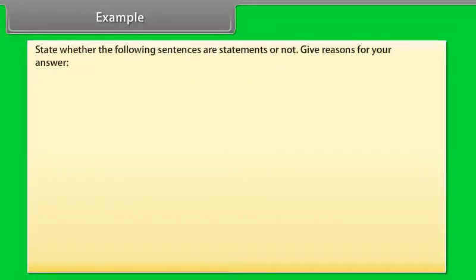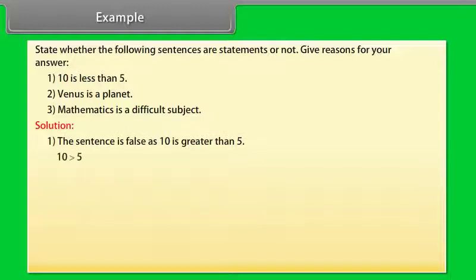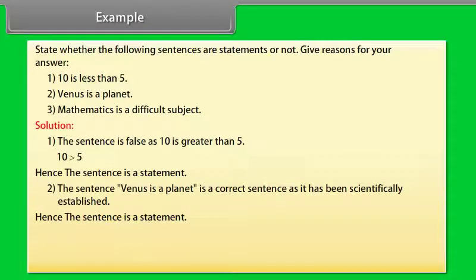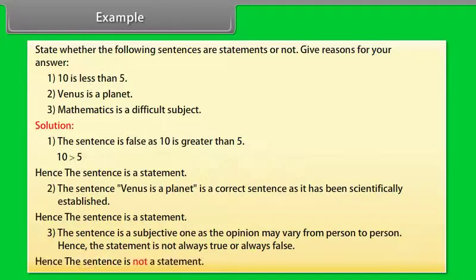Example: State whether the following sentences are statements or not. Give reasons for your answer. (1) 10 is less than 5. (2) Venus is a planet. (3) Mathematics is a difficult subject. Solution: The sentence '10 is less than 5' is false, as 10 is greater than 5. Hence, it is a statement. 'Venus is a planet' is correct, as it has been scientifically established. Hence, it is a statement. 'Mathematics is a difficult subject' is a subjective sentence, as the opinion may vary from person to person. Hence, it is not always true or always false, so it is not a statement.